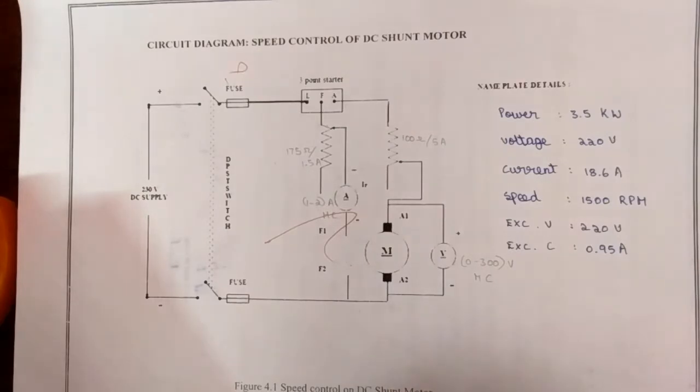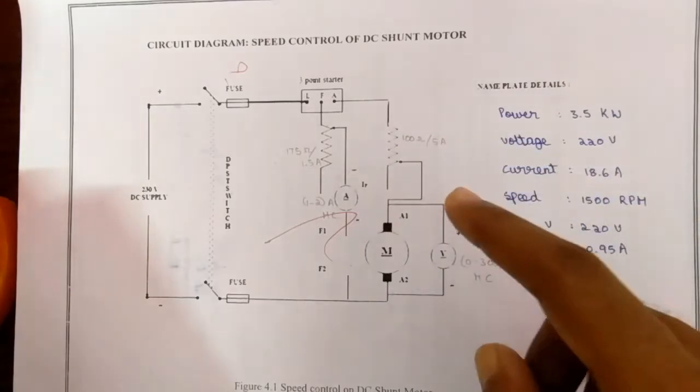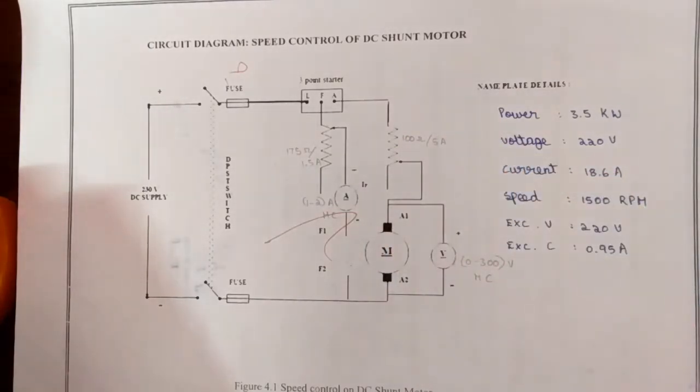Now the armature rheostat is varied and the corresponding readings of Eb and N are noted down. N is the speed of the motor. The same procedure is repeated for different values of different field currents.